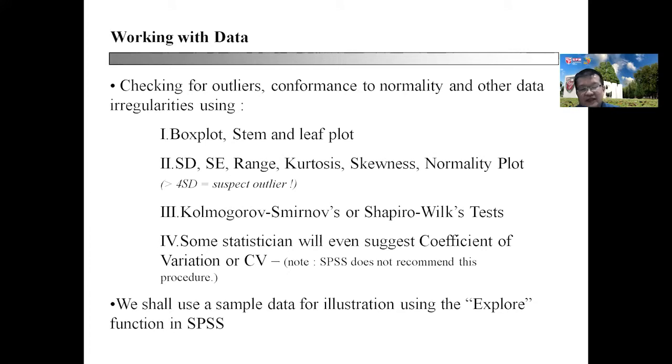Once we have done that, it's time to check for outliers, conformance to normality, and other data irregularities using the following tools: box plot, stem and leaf plot, and by relying on the range of quantities, for example, SD, SE, range, kurtosis, skewness, and normality plot.